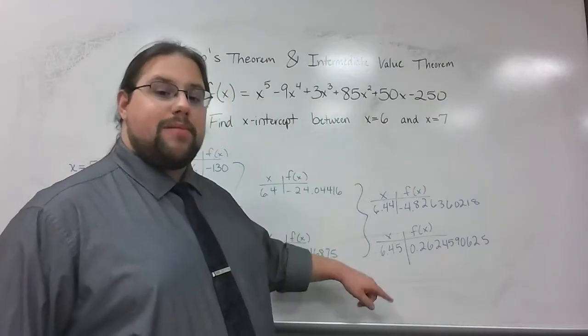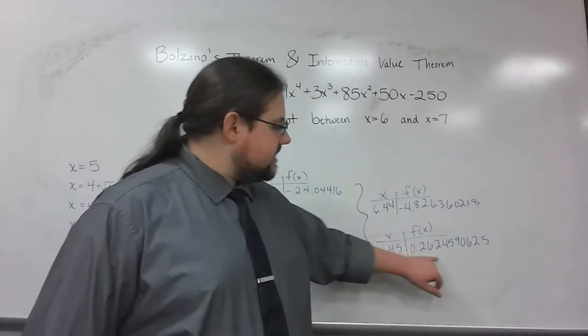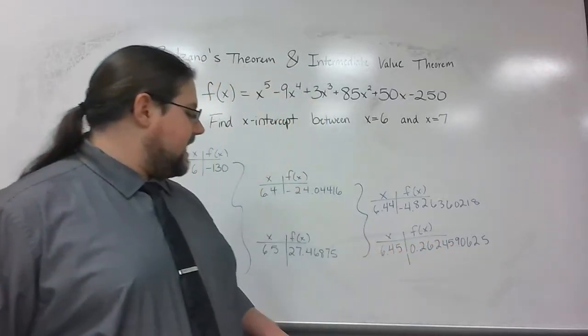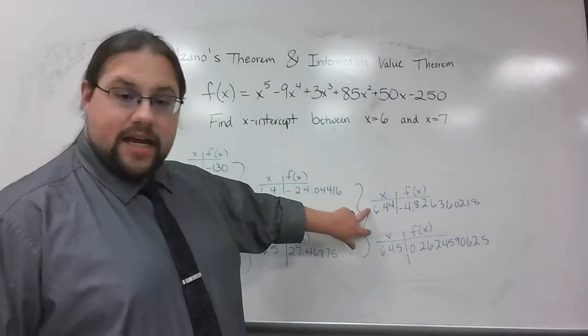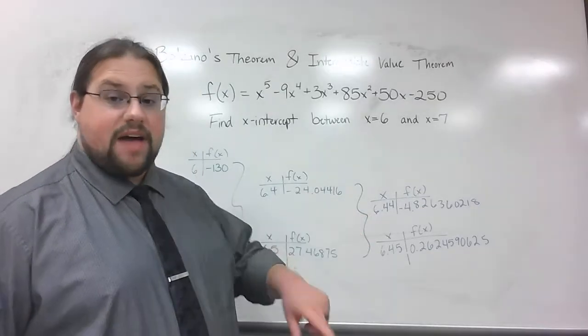Now, at this point, I'm probably thinking it's closer to 6.45 because this is closer to 0. Now that I've said that, I want to make sure. Like I said, if I were to stop here at two decimal places, I'd probably say 6.45 is going to be closer.